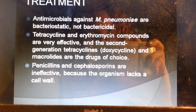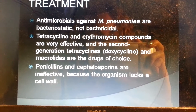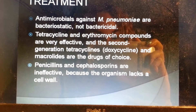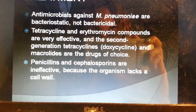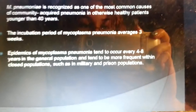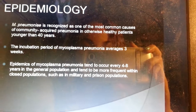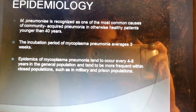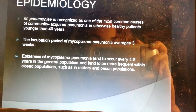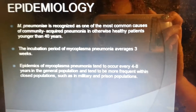Treatment is antimicrobial against Mycoplasma pneumoniae, or bacteriostatic, not bactericidal. Tetracycline and erythromycin compounds are very effective, and the second-generation tetracyclines — also known as doxycycline — and macrolides are the drugs of choice. Penicillins and cephalosporins are ineffective because the organism lacks a cell wall. Mycoplasma pneumoniae is recognized as one of the most common causes of community-acquired pneumonia in otherwise healthy patients younger than 40 years. The incubation period averages three weeks. Epidemics tend to occur every 4–8 years in the general population, and more frequently within close populations such as military or prison populations.